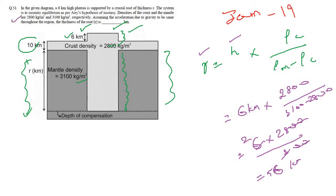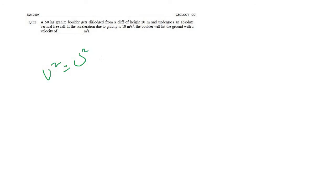Now question number 52. This is from class 12 physics. There was a formula v² = u² + 2as. We just need to apply this formula.